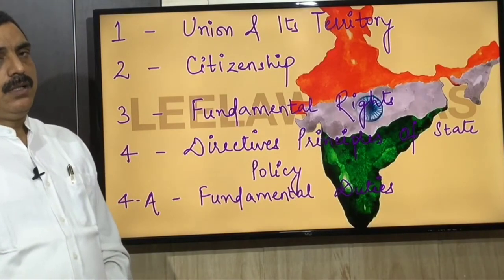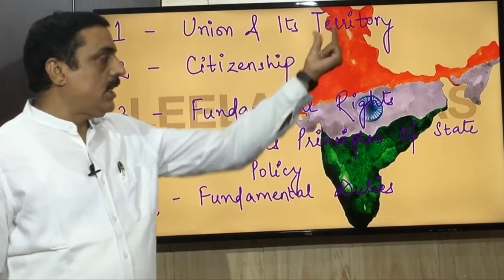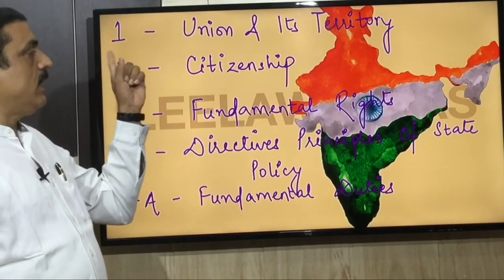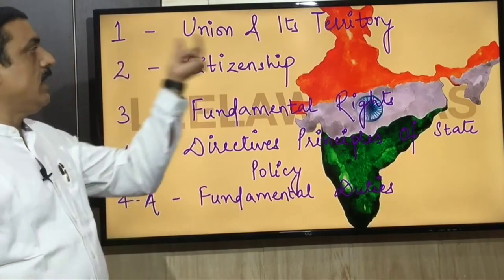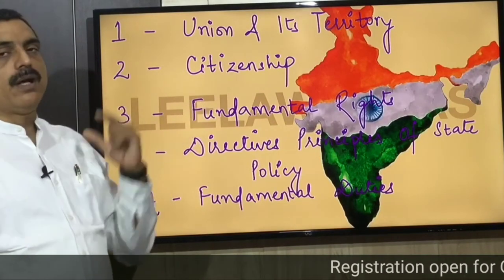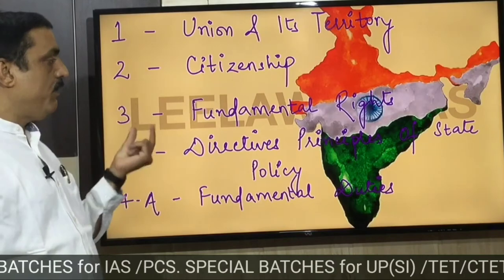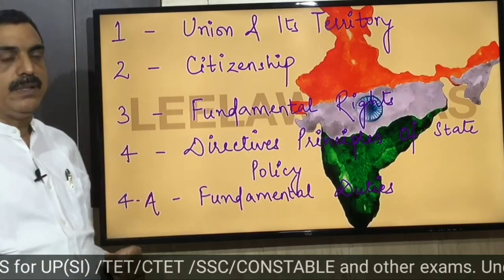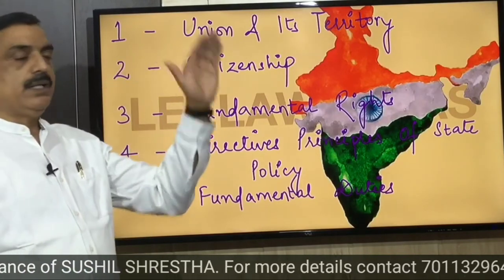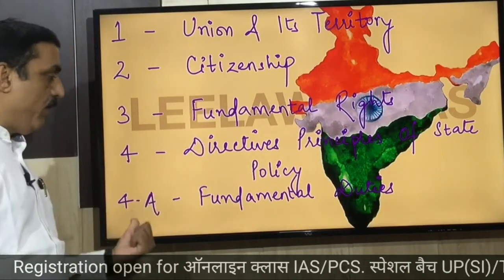The story to memorize these: Union is the father and its territory is the son — UP, Bihar, Kerala, Tamil Nadu are denoted as sons. Part 1: one father and son. Part 2: citizenship of two countries — they retain the citizenship of two countries. Part 3: three Fundamental Rights. Part 4: four Directive Principles. Part 4A: fundamental duties.